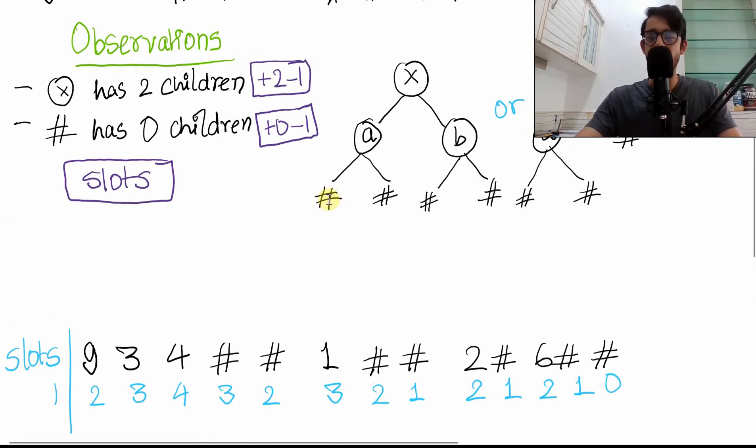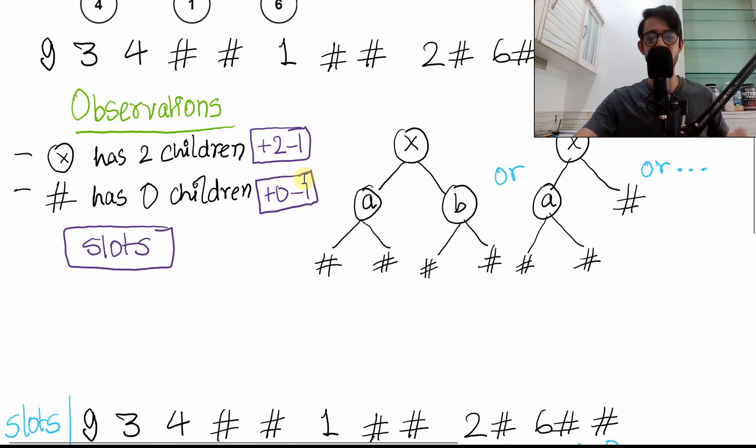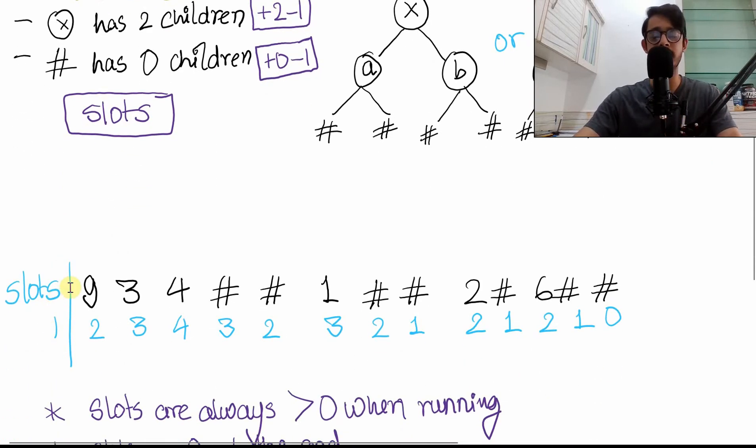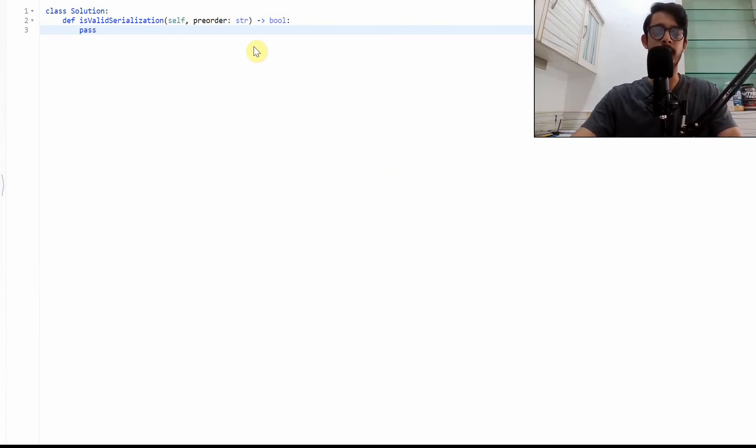See, because the outline is always these hashes. The outline is always going to give you a score of zero at the very end. Okay, with that in mind, with the plus one minus one logic in mind and the slots initializing by one, we can now go on to coding this.